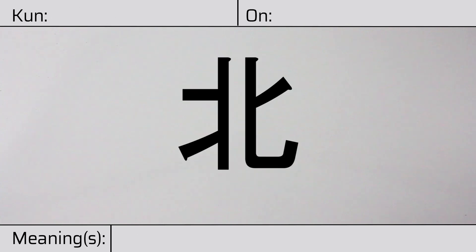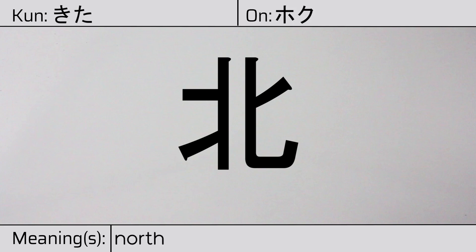Welcome to this lesson on Japanese kanji. Today, we'll be discussing this character. This kanji has a kunyomi, or Japanese reading of kita. And it has an onyomi, or Chinese reading of hoku. This character has the meaning 'north.'